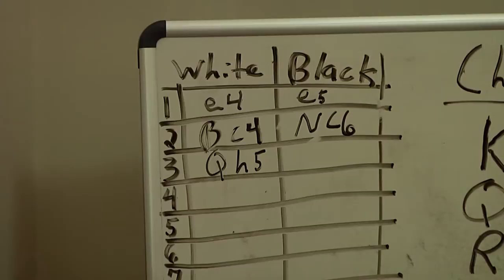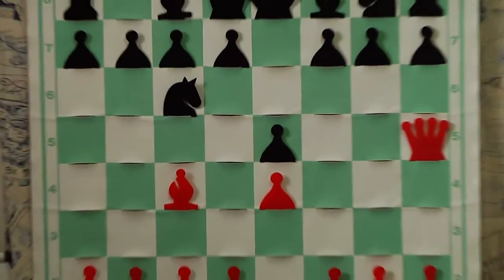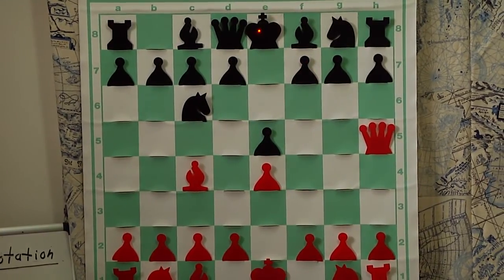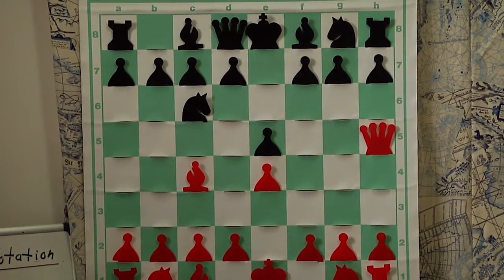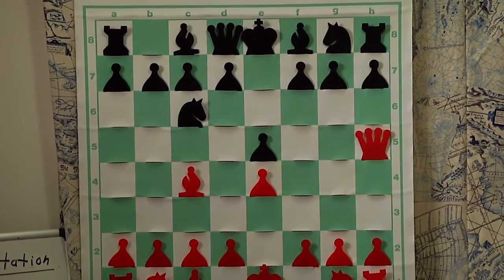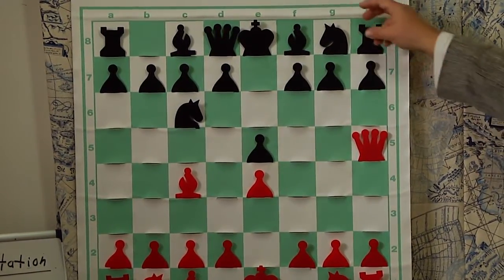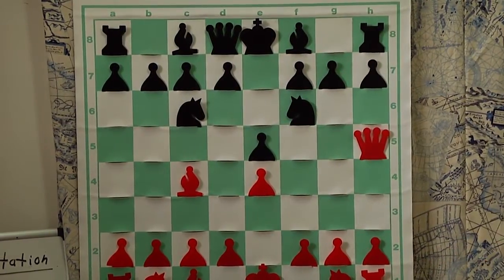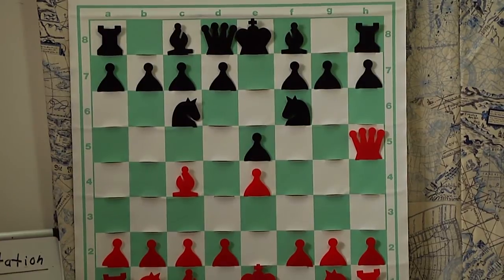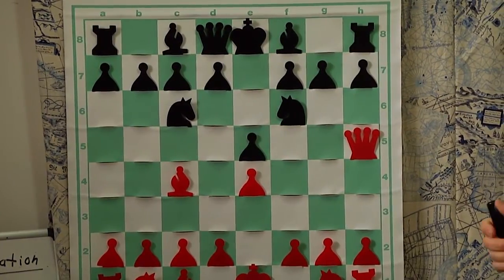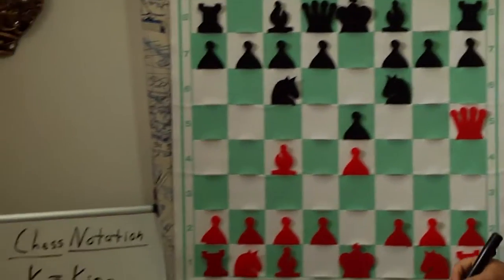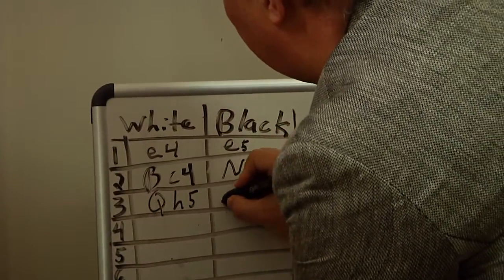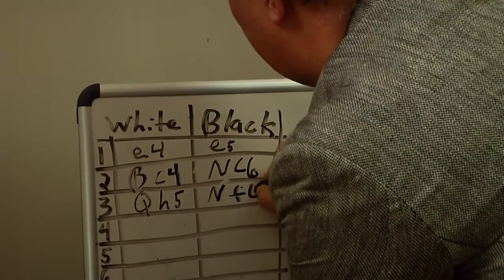Okay, black will now respond, unfortunately not seeing the deadly threat on f7 with both the bishop and the queen converging upon it and only one piece, the king defending it. We're going to see that black, unfortunately, must not have seen this threat. Black makes the move knight to f6, which actually looks okay to the naked eye as it seems to threaten the queen, but it is completely inadequate to defending f7. We'll write down black's third move here as Nf6.